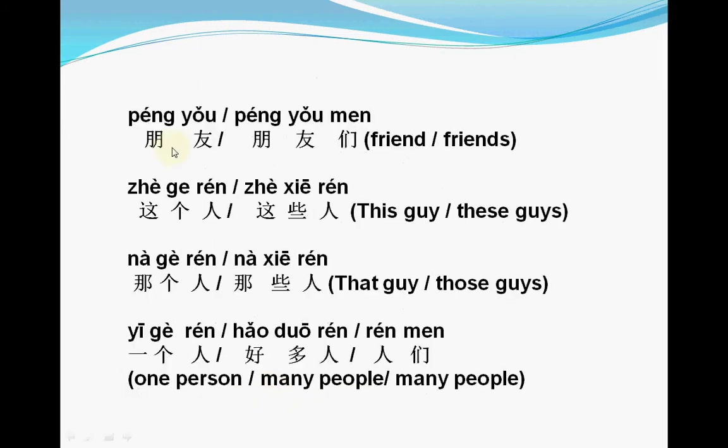Another example: 朋友 (péngyǒu) is the singular, and 朋友们 (péngyǒumen) is the plural.